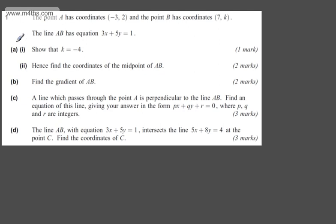In part A, the first part for one mark asks us to show that k equals -4. All I'm going to do is substitute in the values. So we'll have 3 times 7 plus 5 times k, and that will equal 1. 21 plus 5k must equal 1.